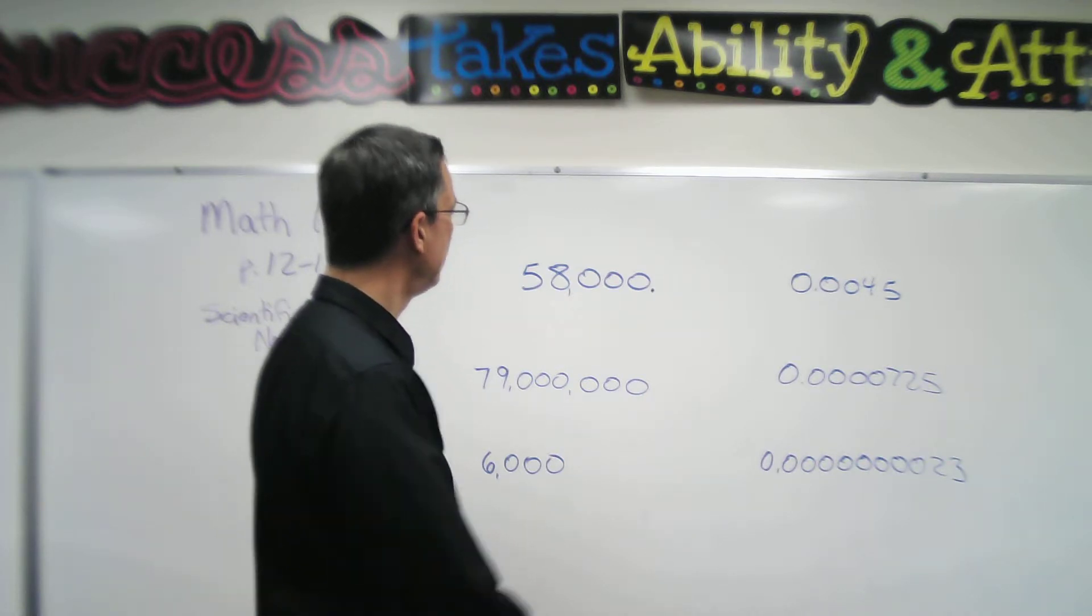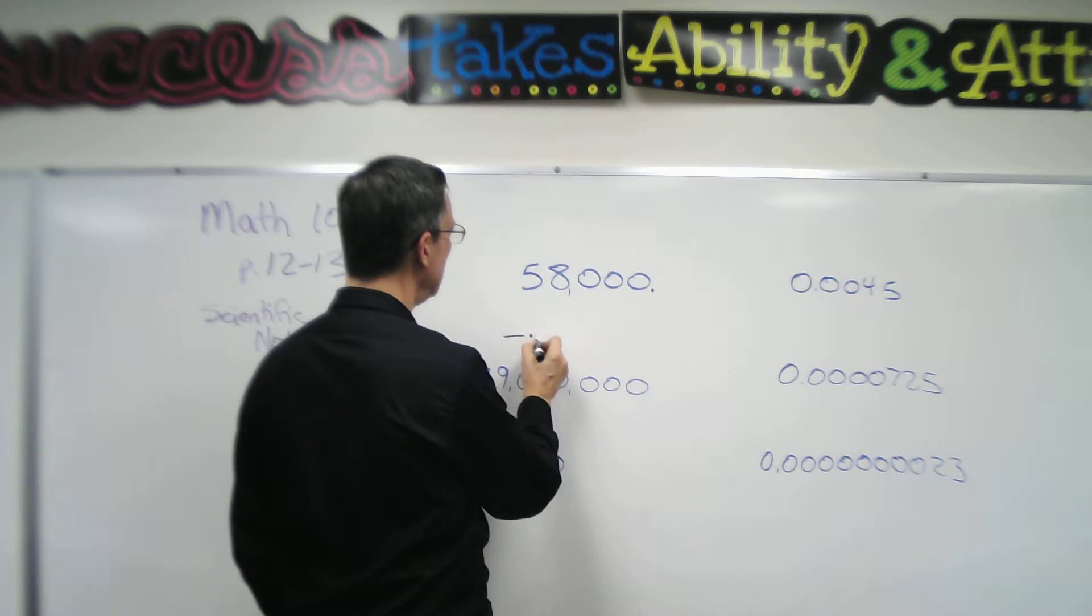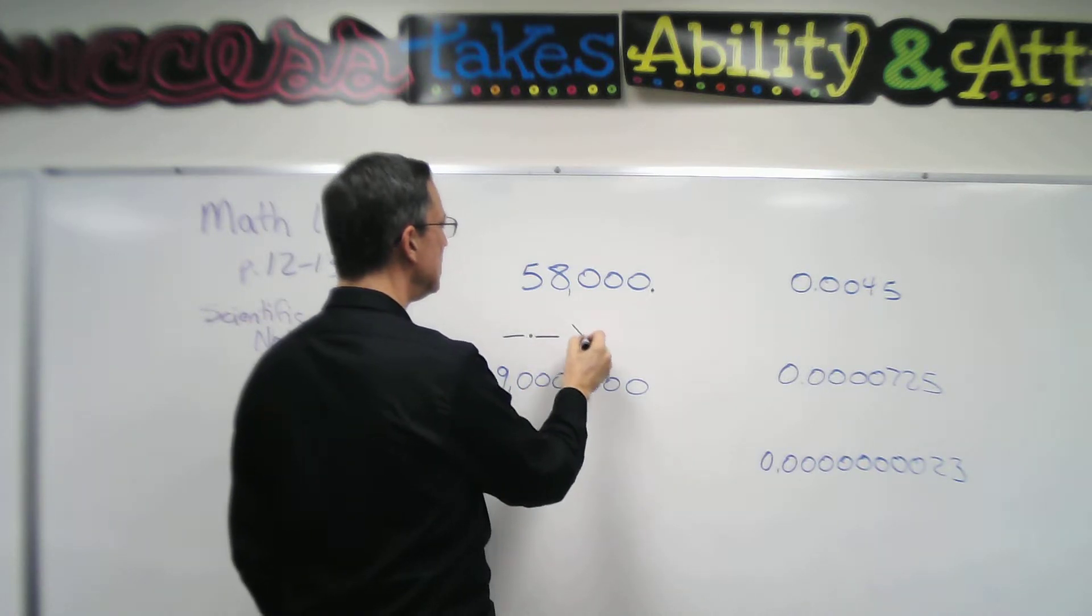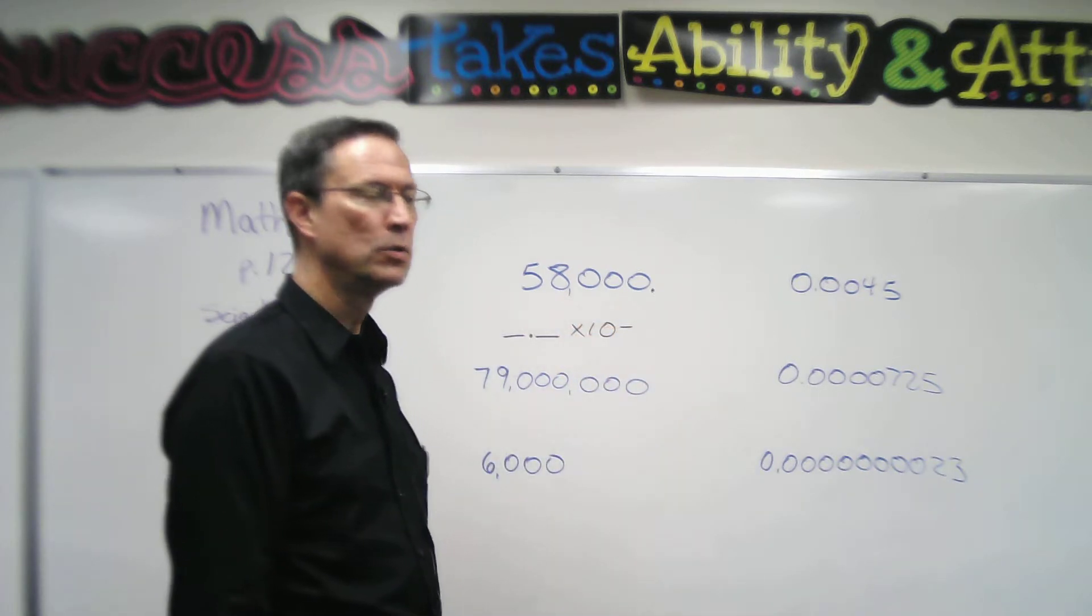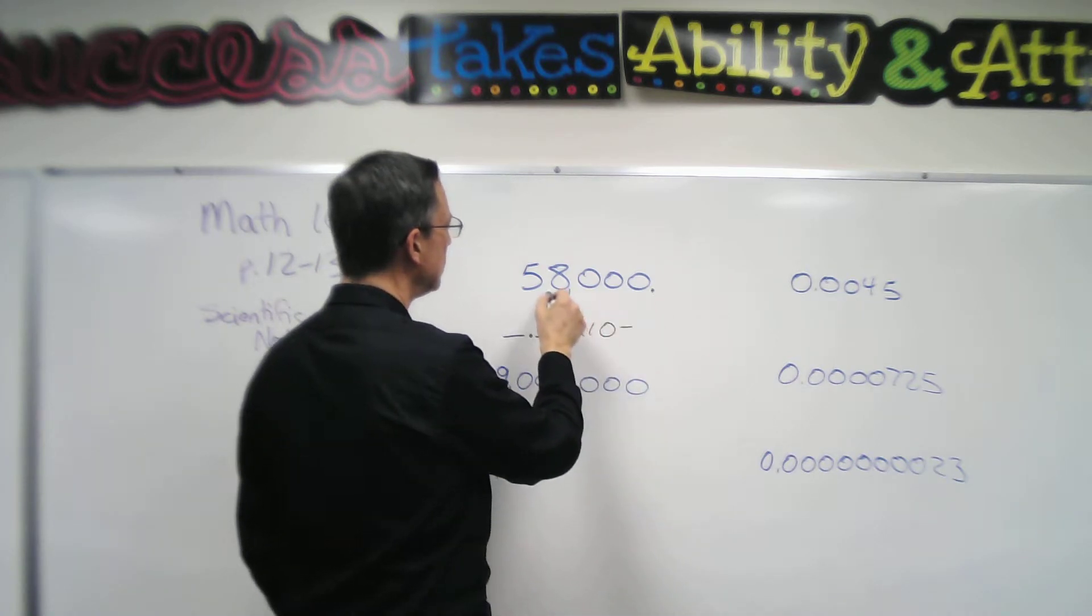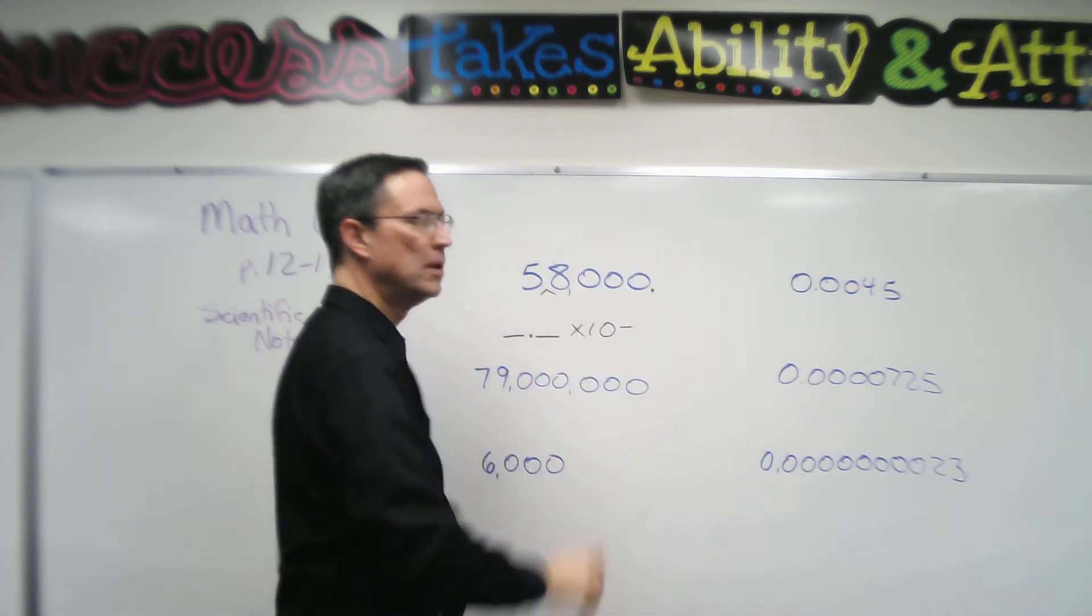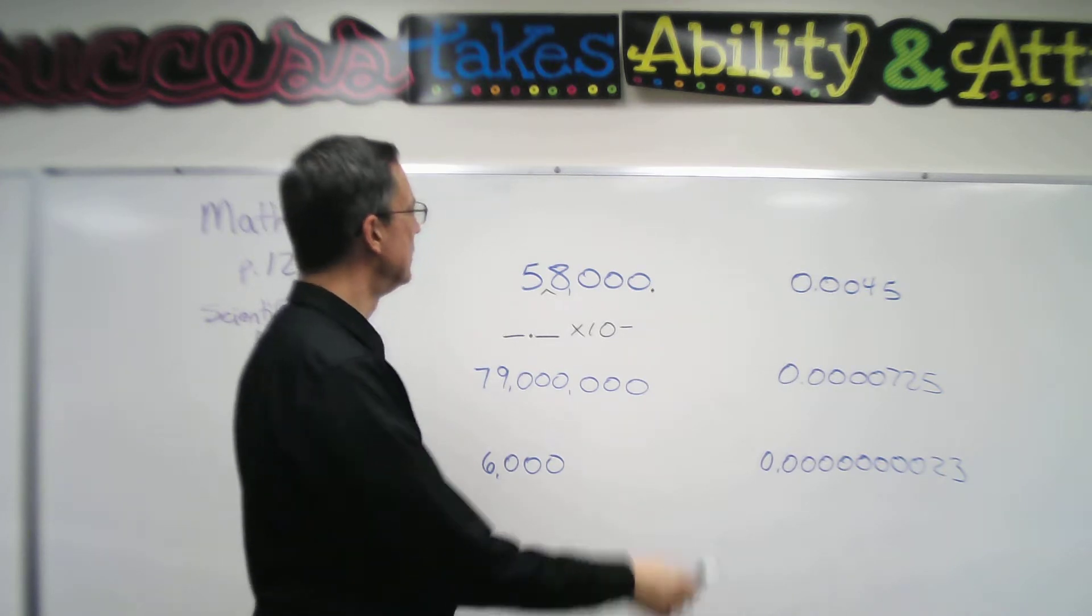To write it in scientific notation, I have to write one digit and then the decimal, and then if there are other digits, times 10 to an exponent, to a power.